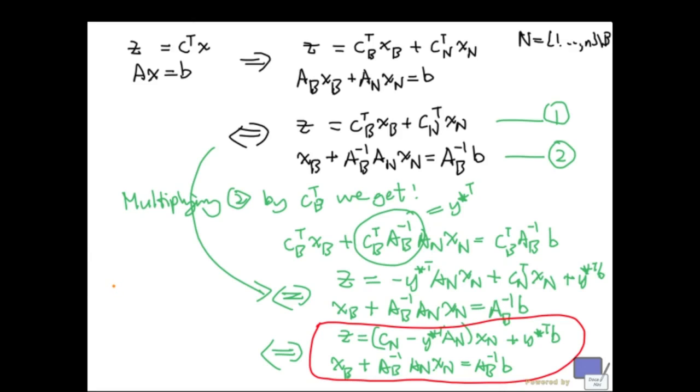Now, remember that we are assuming that there is a Y star transpose A K bigger than C K. So, if I look at this here, say I increase X K without increasing any other X value indexed by elements in N. Then, I can actually reduce the Z value.